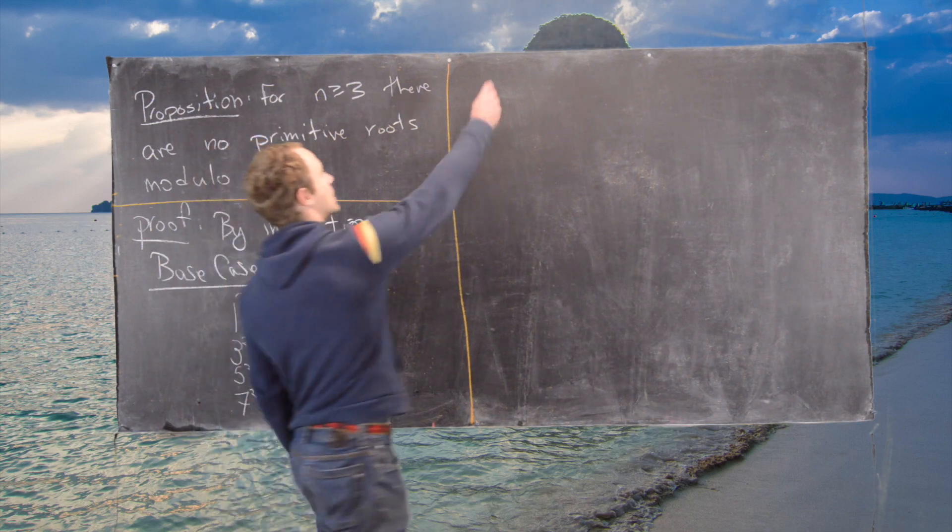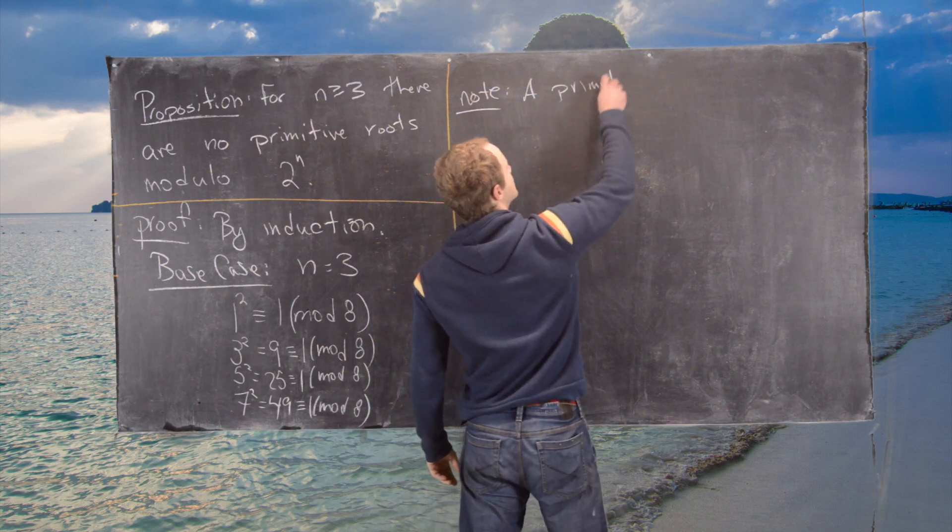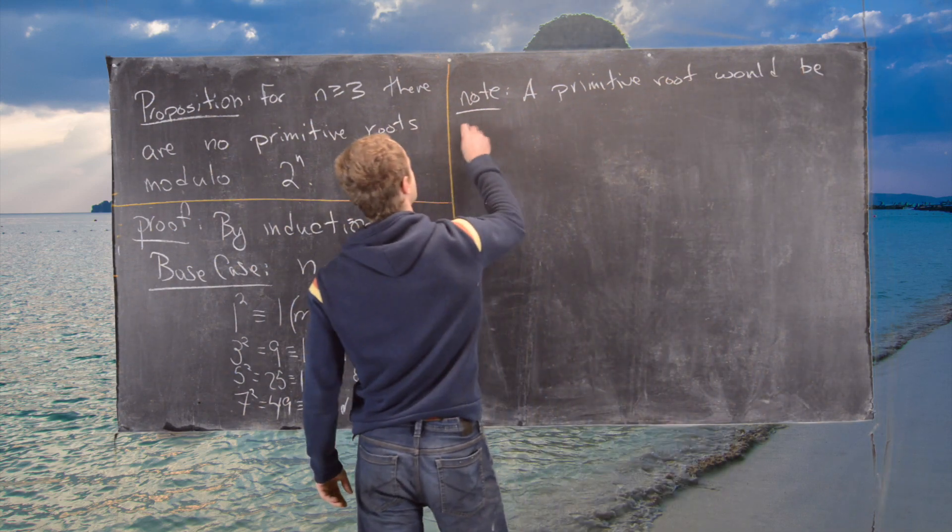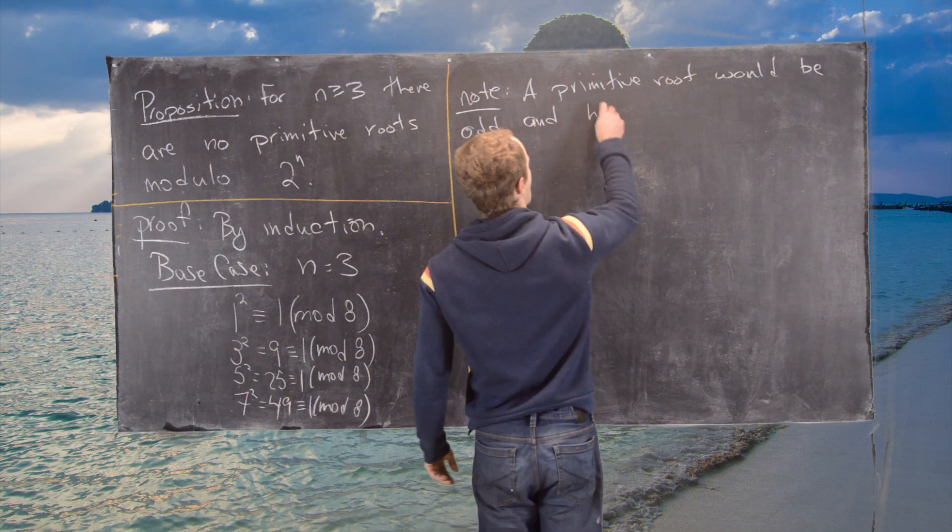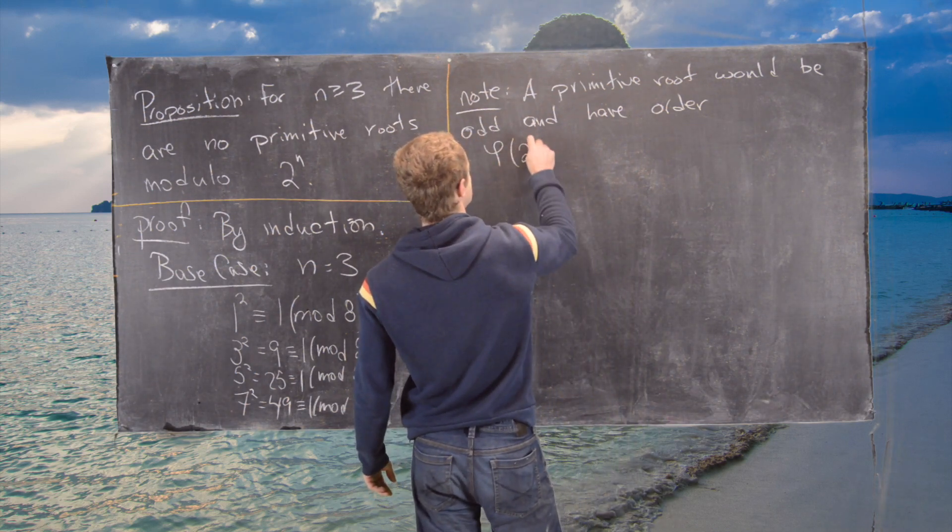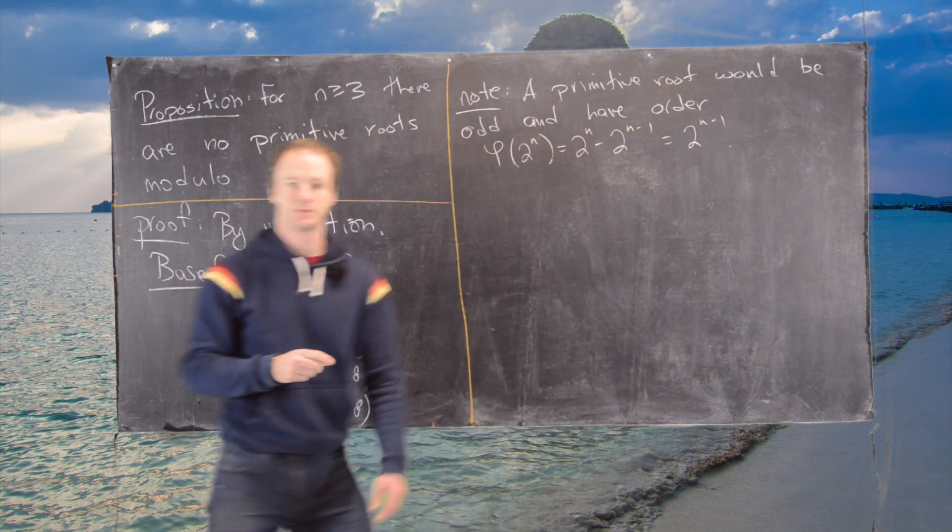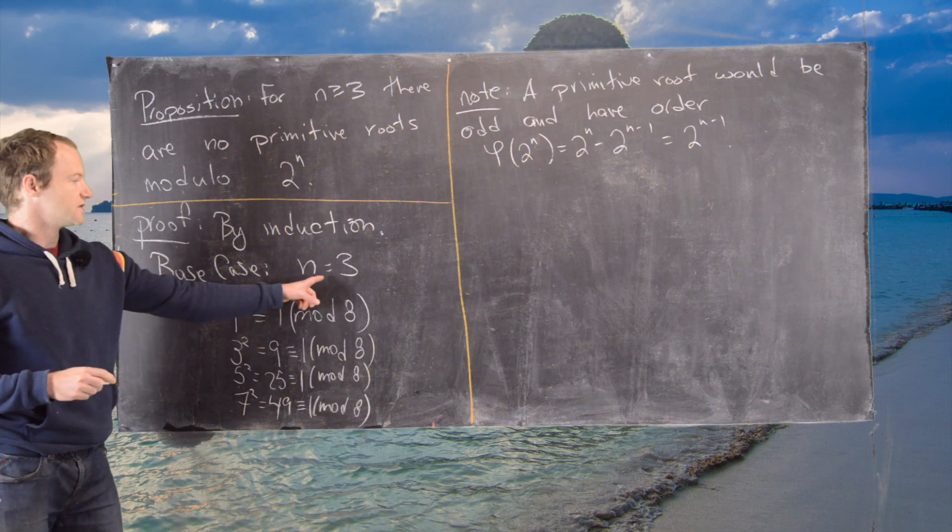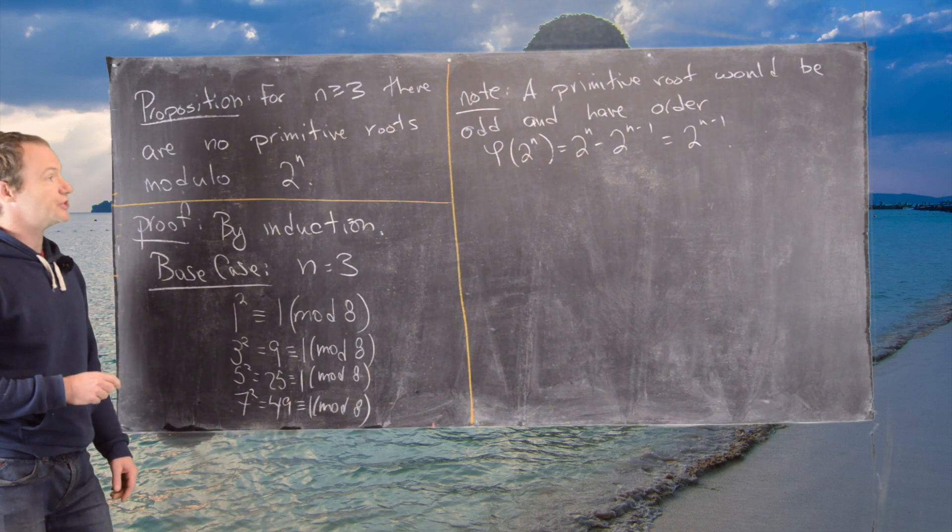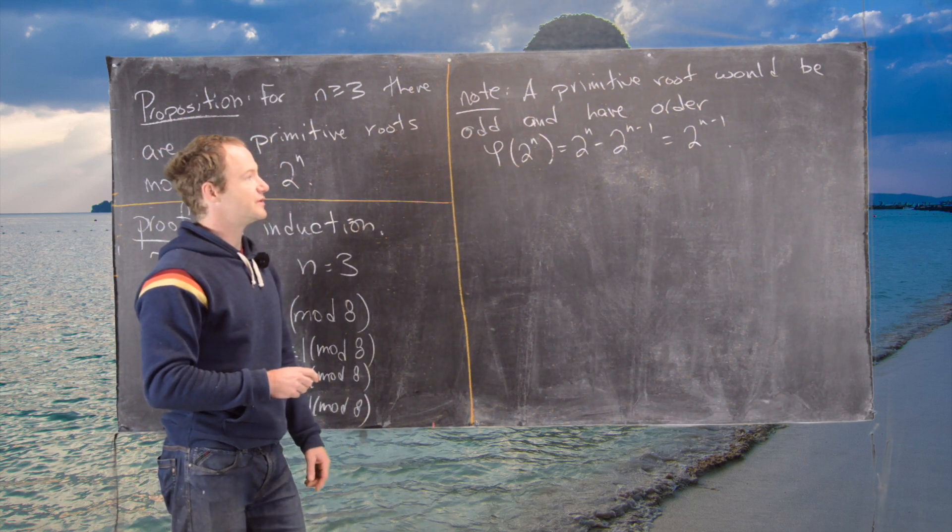So notice what we needed is something of order 4, but we got a bunch of things of order 2. So what we'll do is we'll raise everything to half the necessary order in order to have a primitive root. So let's maybe first notice the following. A primitive root would be odd and have order phi of 2 to the n, which is 2 to the n minus 1.